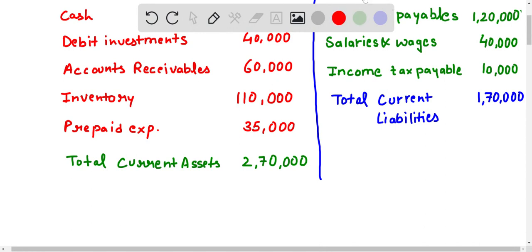As we know that to find out current ratio, the formula is current ratio equals current assets divided by current liabilities. So here current assets,